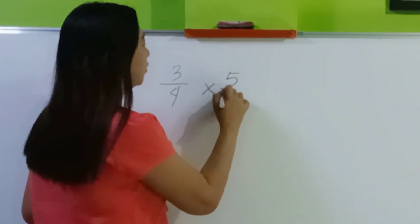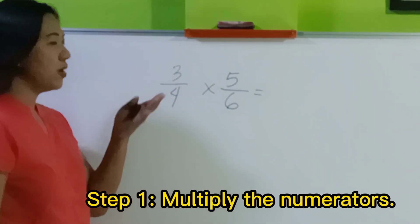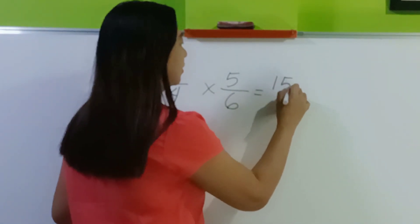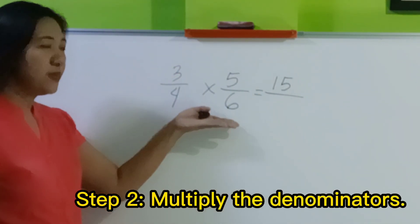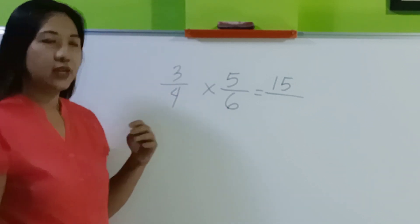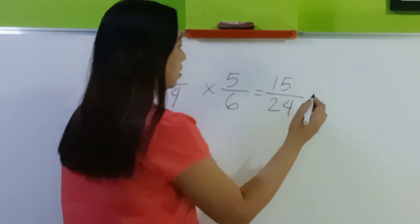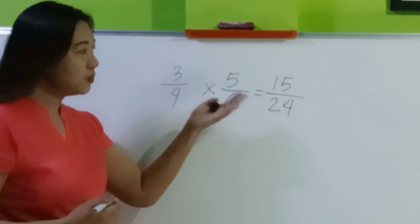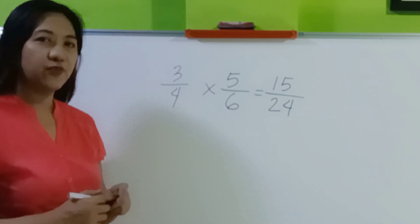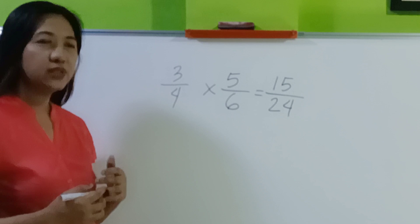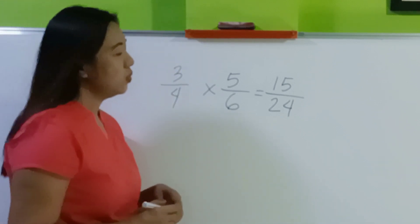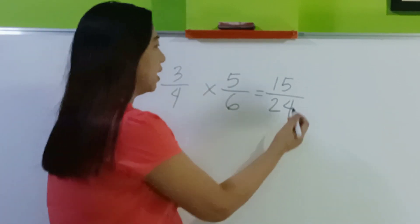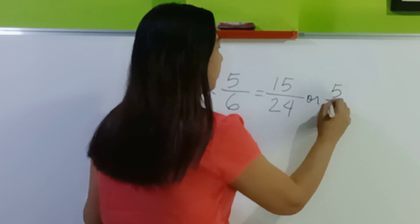How do we multiply proper fractions? Step one: multiply the numerators — 3 times 5 is 15. Next, multiply the denominators — 4 times 6 is 24. Step three: simplify the fraction if needed. Can you still reduce it to its lowest term? Yes. What is the greatest common factor of 15 and 24? You can divide by 3.